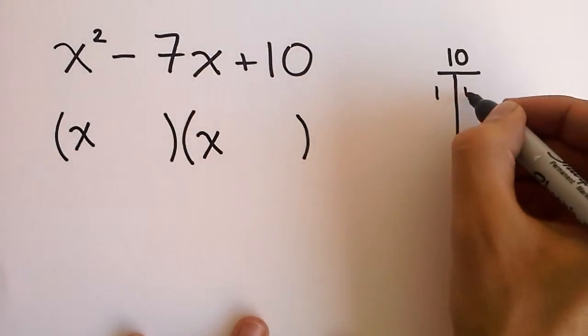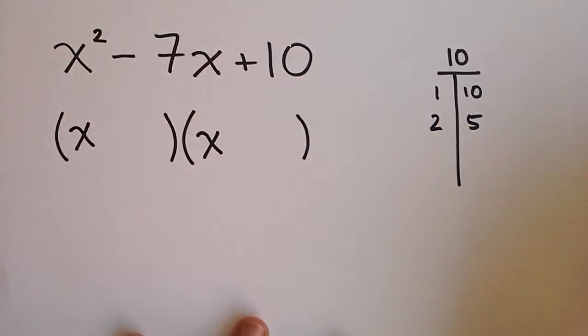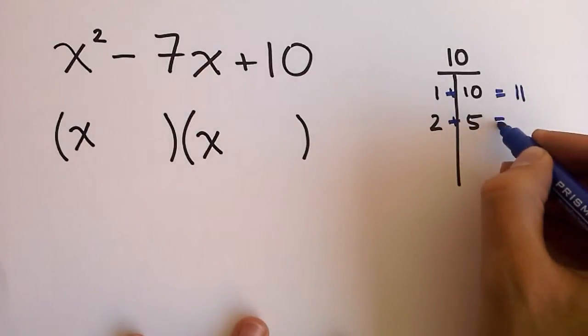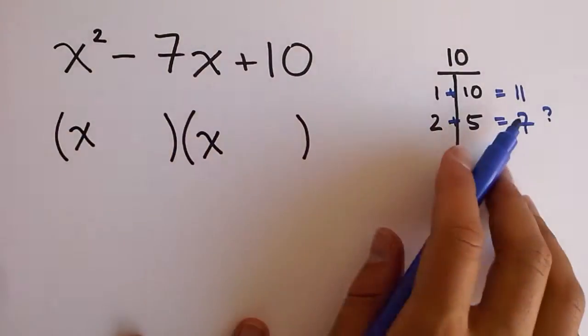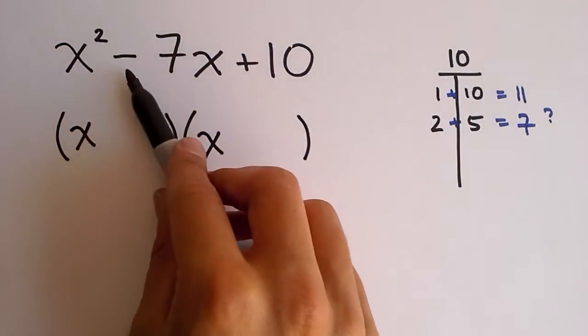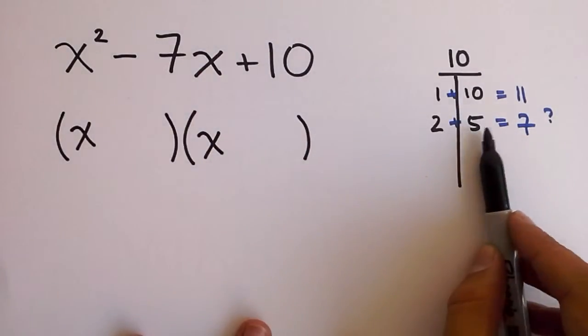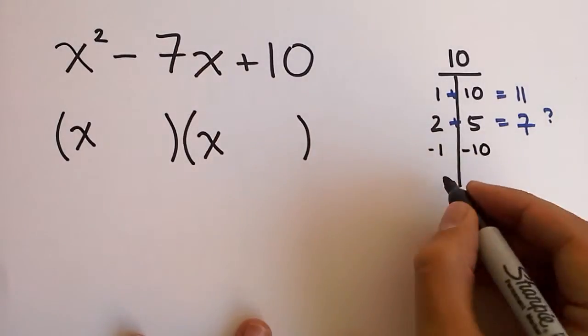So you have 1 and 10, you have 2 and 5, and now let's perform our test. 1 plus 10 is 11, 2 plus 5 is 7, but we didn't achieve what we wanted. We want a negative 7 and this guy is a 7. That happens because when you see a negative sign here, you need to consider not only the positive factors of your constant term, but you should also consider the negative ones.